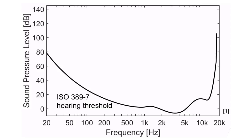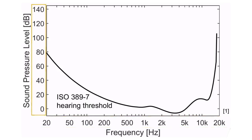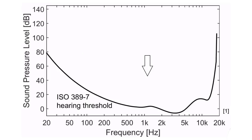First, I want to show you this graph that describes the threshold of hearing across the frequency spectrum. On the x-axis, we see the range of human hearing in hertz, ranging from 20 Hz to 20 kHz. The y-axis shows sound pressure level from 0 dB to 140 dB SPL. The line plotted on this graph represents the threshold of hearing, or the quietest sound pressure level that can be heard at each frequency. Notice that a very low frequency or very high frequency is required to be much greater in level in order to be heard compared to a mid-range frequency.